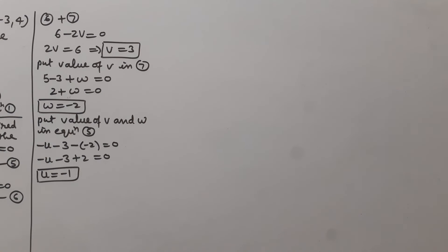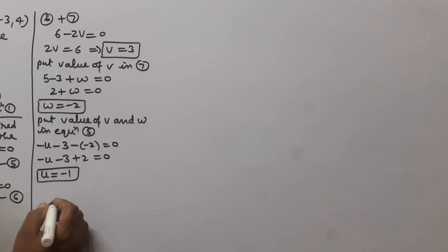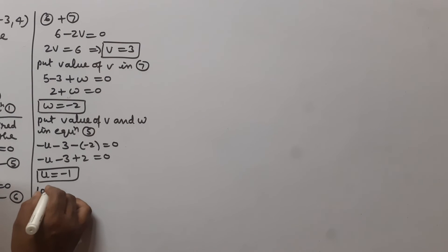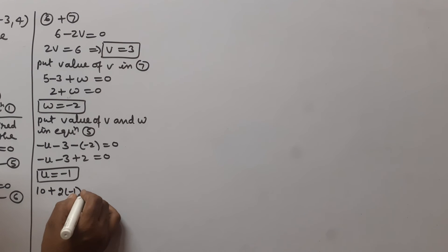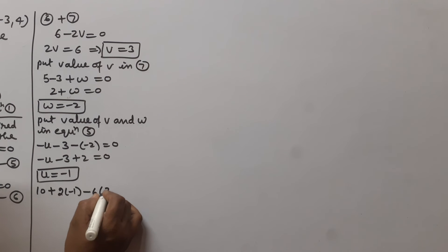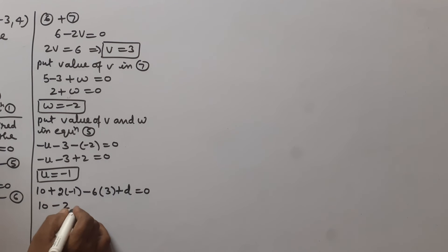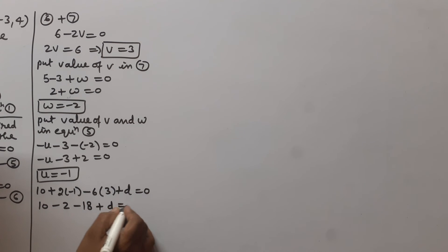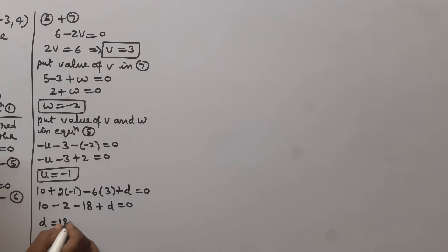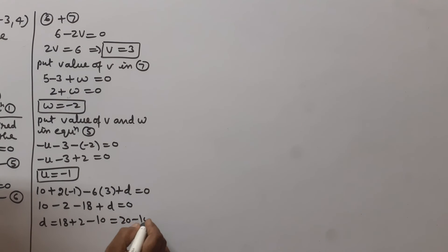Now we put the values of u and v in equation 4 to find d. From equation 4: 10 + 2(-1) - 6(3) + d = 0, so 10 - 2 - 18 + d = 0, giving d = 18 + 2 - 10 = 10. So the value of d is 10.